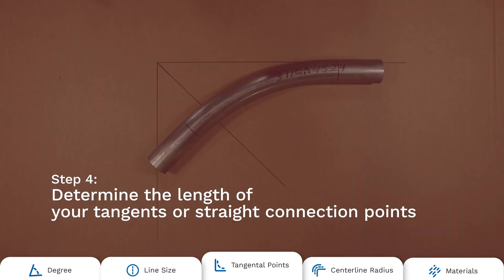When you have your angle, diameter and gauge, you'll then need to determine the length of the tangent or the straight part of the elbow that comes off the curve. These tangents are used during install, so you have a straight connection point for clamping couplings or welding a flange.